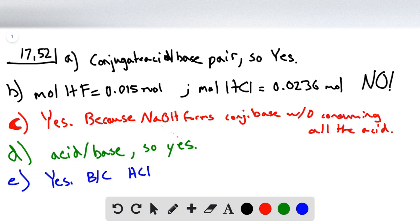So we're going to have a situation similar to part c where we say yes, because HCl forms the conjugate acid without consuming all the weak base.